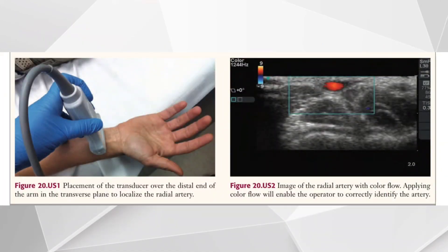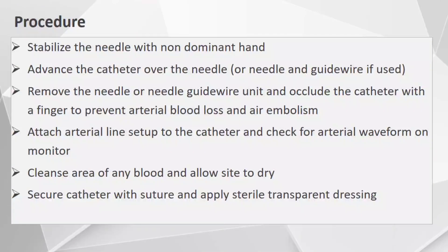To locate the radial artery under ultrasound guidance, place the probe over the distal forearm in the transverse plane to locate the radial artery. You can confirm it with the help of Doppler and see the color flow. Stabilize the needle with the non-dominant hand and advance the catheter over the needle, or needle and guide wire if used. Remove the needle or needle-guide wire unit and occlude the catheter with a finger to prevent arterial blood loss and air embolism. Attach the arterial line set to the catheter and check for arterial waveform on the monitor. Cleanse the area of any blood and allow the site to dry.